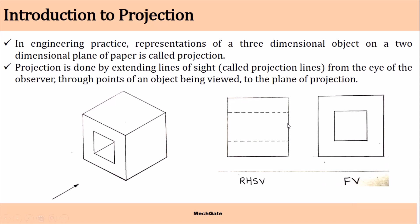Projection is nothing but the representation of a three-dimensional object on a two-dimensional plane of paper. This is called a projection. A three-dimensional object is projected on a plane of paper. Projection is done by extending lines of sight, called projection lines, from the eye of the observer through points of an object being viewed to the plane of projection.